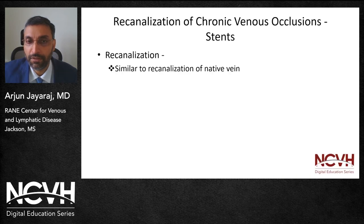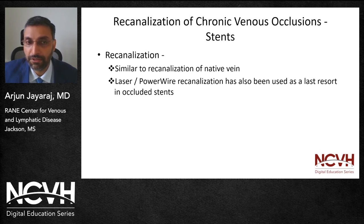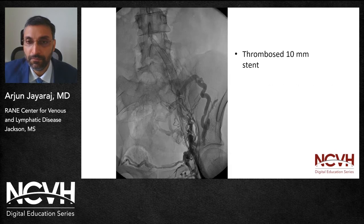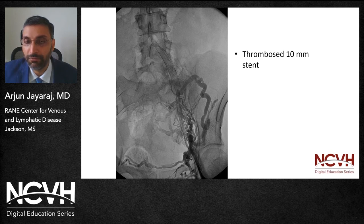As far as recanalization of occluded stents goes, the principles are similar to recanalization of the native vein. At times, a laser catheter or power wire recanalization may have to be done as a last resort. This is an example of a thrombosed 10 millimeter stent. It's extremely important to use adequate size stent — we do not use stent sizes below 14 millimeters.